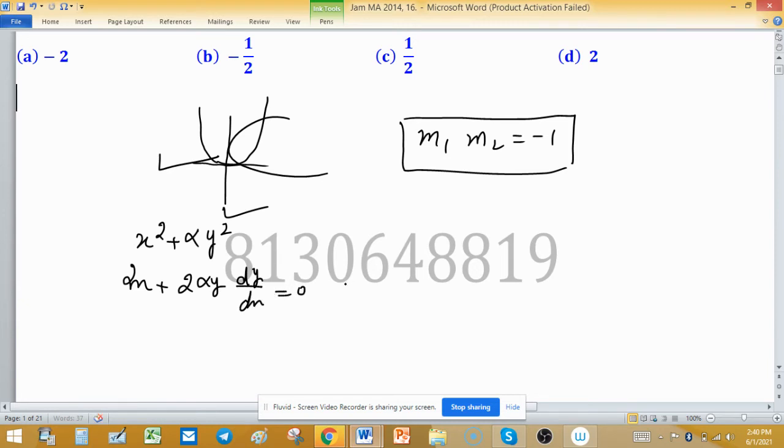This equation implies that dy/dx = -x/(αy). The second curve is y = x². Find the slope of this curve by differentiating with respect to x, so dy/dx = 2x.